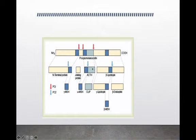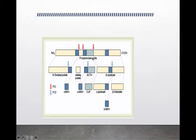ACTH also has MSH-like activity. Whenever there is any abnormality causing excess synthesis of ACTH, it will cause darkening of the skin — first because ACTH has MSH-like activity, and second because MSH is also produced alongside ACTH from the pre-prohormone. For these two reasons, any condition causing over-secretion of ACTH leads to pigmentation of the skin.